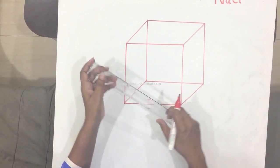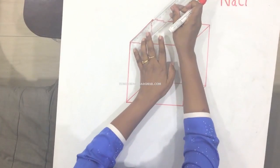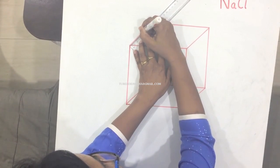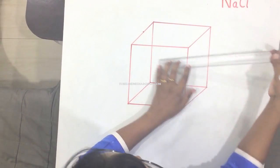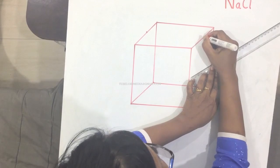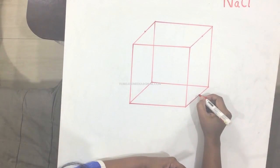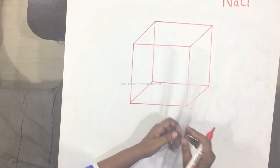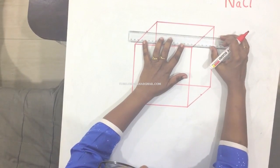So what I am going to do is mark the center point of all these. Mark the center points here, center point here, here and here. I am going to join these lines.